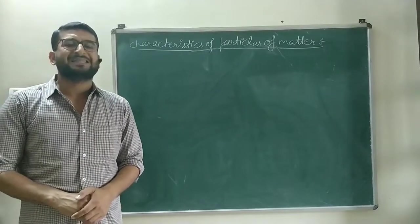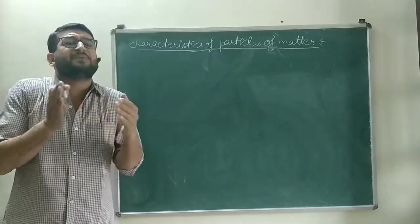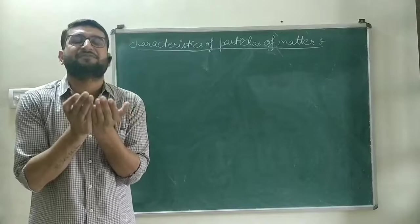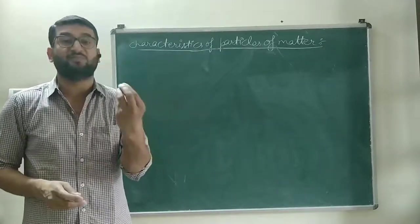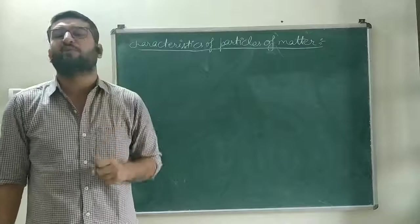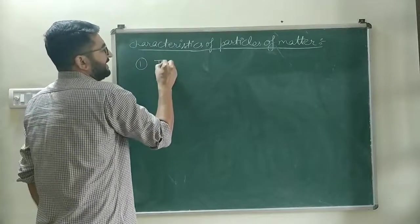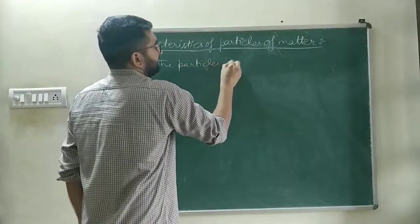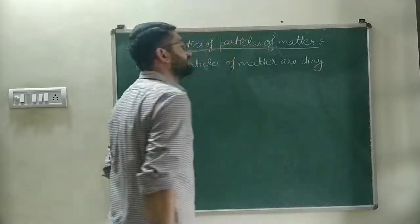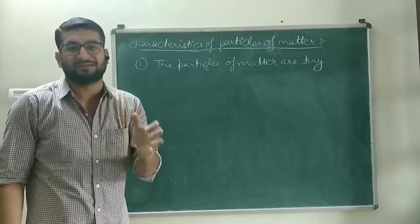Now we will discuss the characteristics of particles of matter. Every matter is made up of particles because every matter has a fixed mass, so it is composed of particles. Those particles of matter have certain characteristics. The first characteristic is: the particles of matter are very, very small. Matter is made up of very tiny or very small particles.